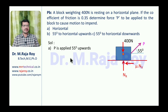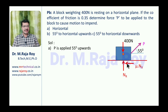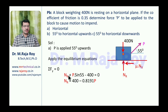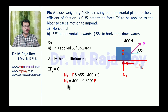Case 2: P is applied at 55 degrees upward. The block still moves to the right, so friction force is towards the left. Applying sigma Fy = 0: Nr (upward) plus P*sin55 (upward) minus 400 (downward) = 0. Since sin 55 = 0.8191, we get Nr = 400 − 0.8191P.